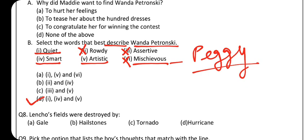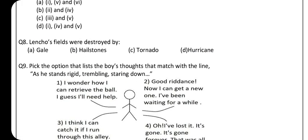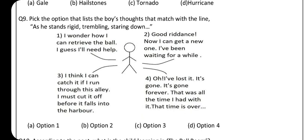Question 8 is from 'A Letter to God' written by G.L. Fuentes. Lencho's fields were destroyed by gale — tufan — hail — olay ke golay — tornado, hurricane, cyclone — chakravaat. Option B is correct. It is a very easy question.